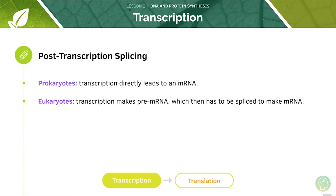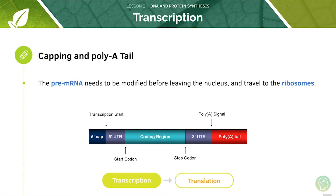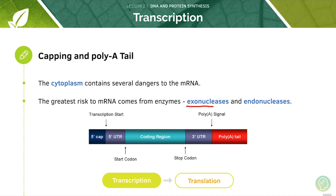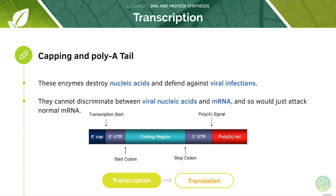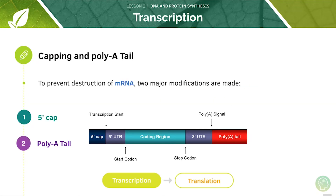Now let's look at post-transcriptional splicing. In prokaryotes, transcription directly leads to an mRNA. But in eukaryotes, transcription makes pre-mRNA, which then has to be spliced to make mRNA. The pre-mRNA needs to be modified before leaving the nucleus to travel to the ribosomes. The greatest risk to mRNA comes from enzymes known as exonucleases and endonucleases — these destroy nucleic acids and defend against viral infections, but cannot discriminate between viral nucleic acids and mRNA. To prevent this destruction, two major modifications are made: the first is a 5' cap and the second is a poly-A tail.